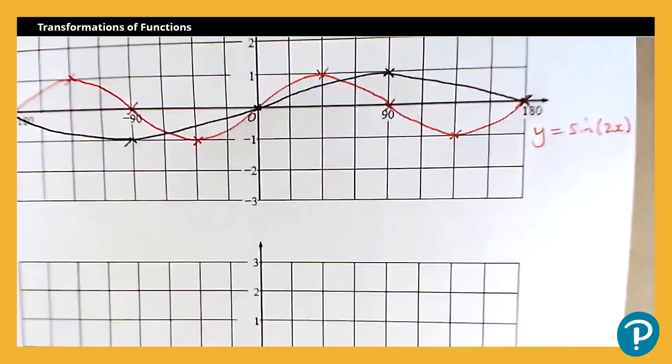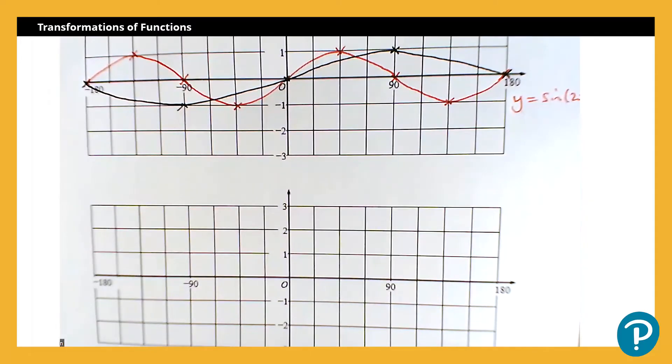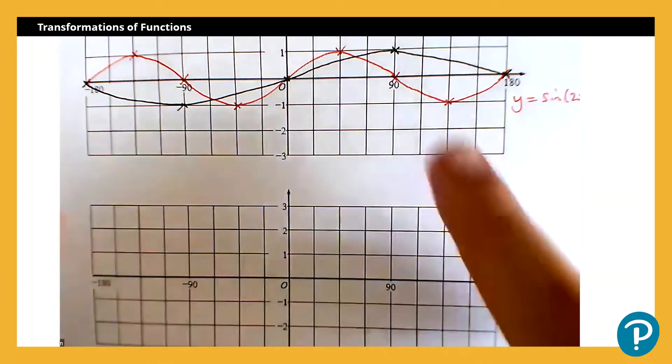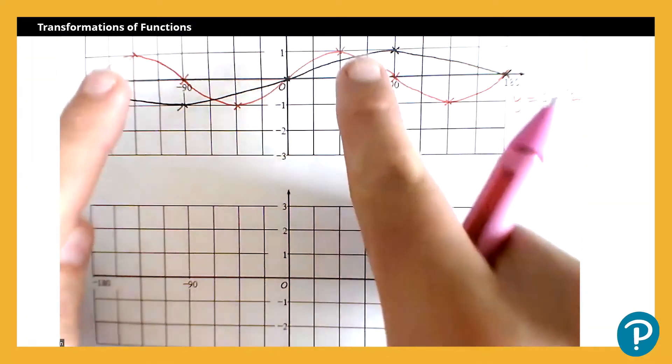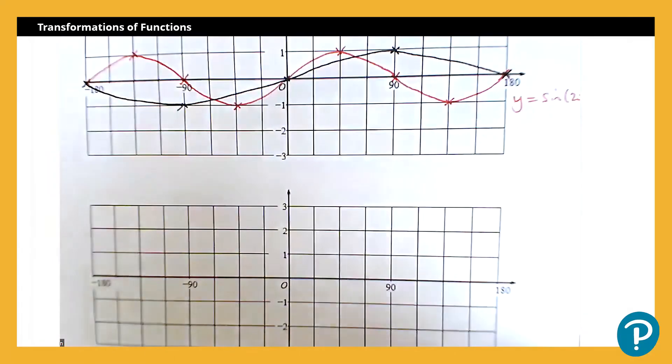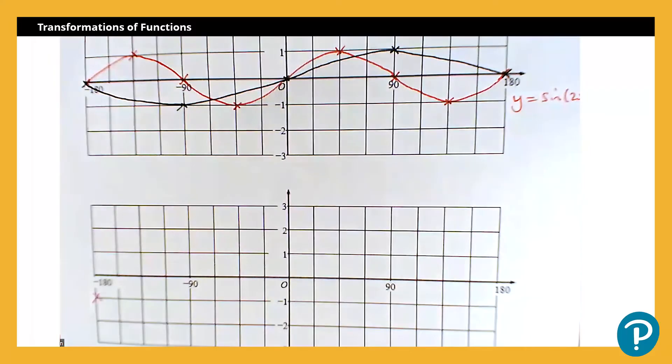I'm just going to move that so we can see the grid below. I then want to plot the graph of y equals sine 2x minus 1. So all we're going to do there, I'm going to move all of my key coordinates, I'm going to translate them down by 1 in the y direction. So, negative 180, 0 will move to negative 180, negative 1.